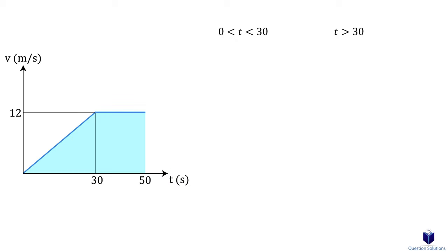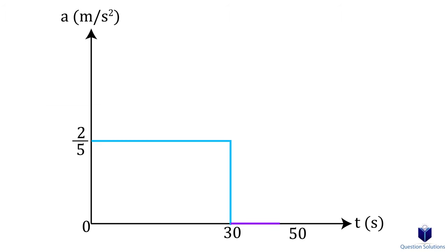To find the acceleration-time graph, we simply take the derivative of each segment. For the first segment, the derivative yields the following equation. The last segment simply becomes zero. Plotting the graph gives us the following. We hope this helped you, and if it did, please give us a like.